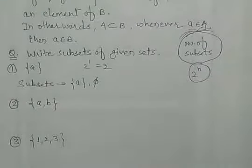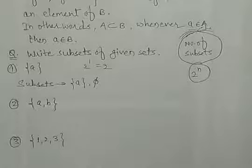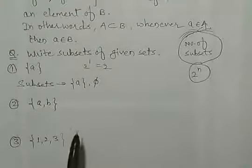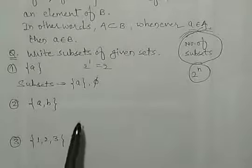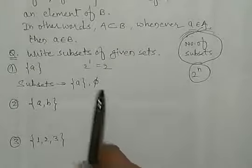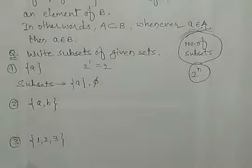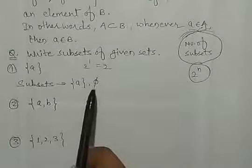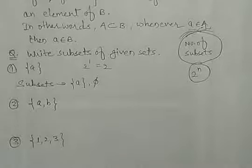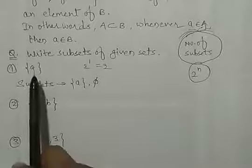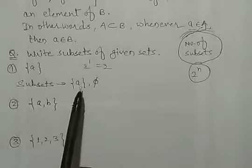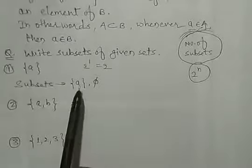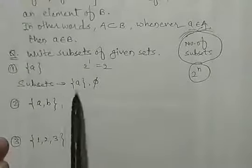और एक होता है ∅ (null set/empty set). यह जो null set या empty set होता है, यह हर set का subset होता है — यह हमेशा ध्यान रखिएगा. मतलब यह ∅ हर बार जब भी हम subsets निकालेंगे, तो उनमें यह जरूर आएगा. और एक वो set है — वो खुद, सारे elements के साथ — वो खुद अपने आपका subset होता है. तो मतलब यह 2 तो fix हैं.